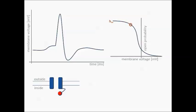The open probability of the inactivation gate is a mirror image of that of the activation gate. As the membrane potential depolarizes the open probability decreases, meaning that at resting potential the inactivation gate is open, and as the membrane potential depolarizes the inactivation gate closes. Inactivation gates reopen when the membrane potential hyperpolarizes back to the resting state. Besides the voltage dependence, there are also other differences between the gates — the kinetics of the inactivation gate are, for example, much slower than that of the activation gate.